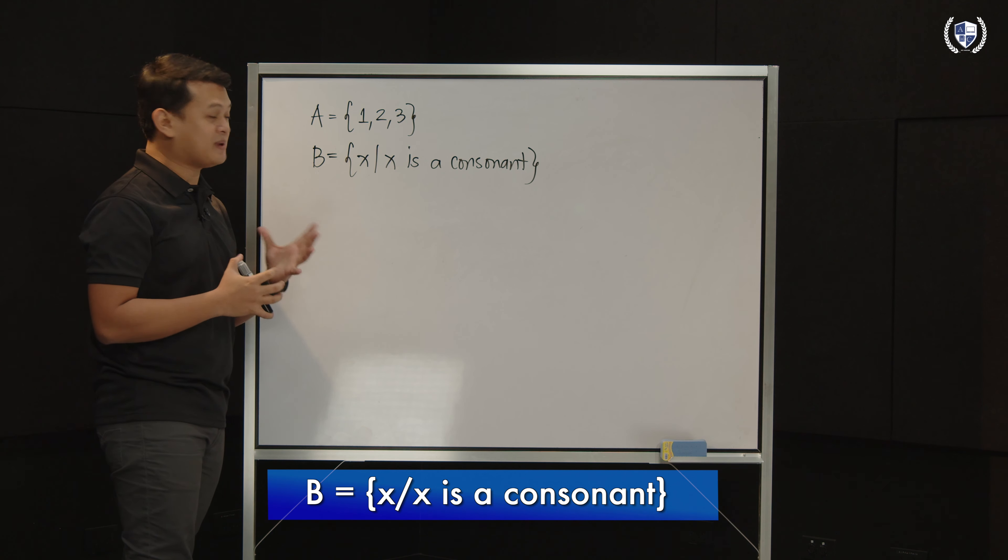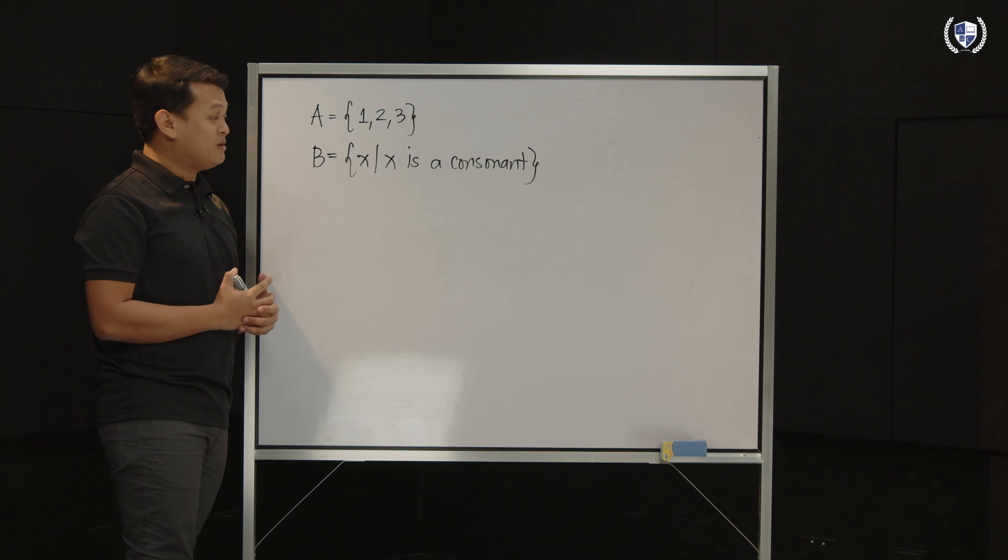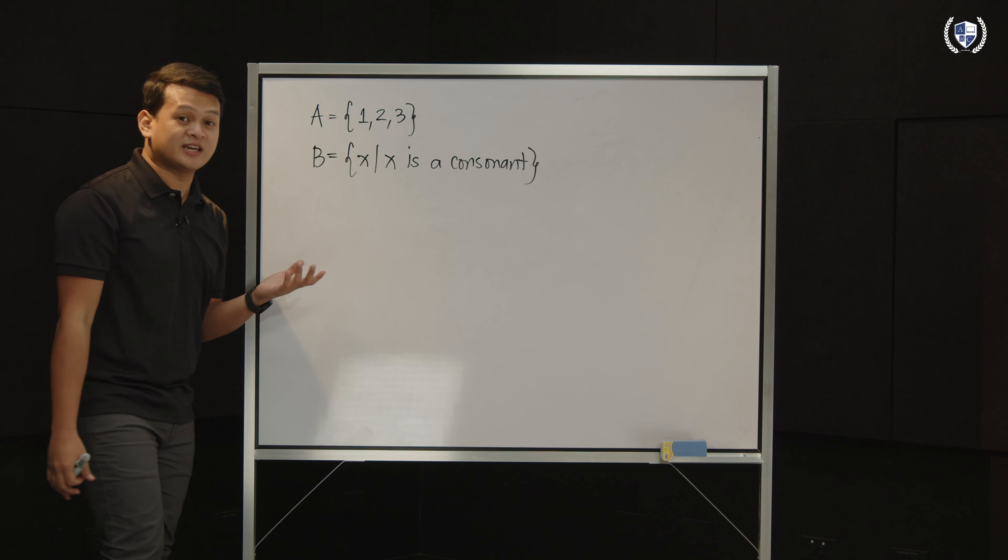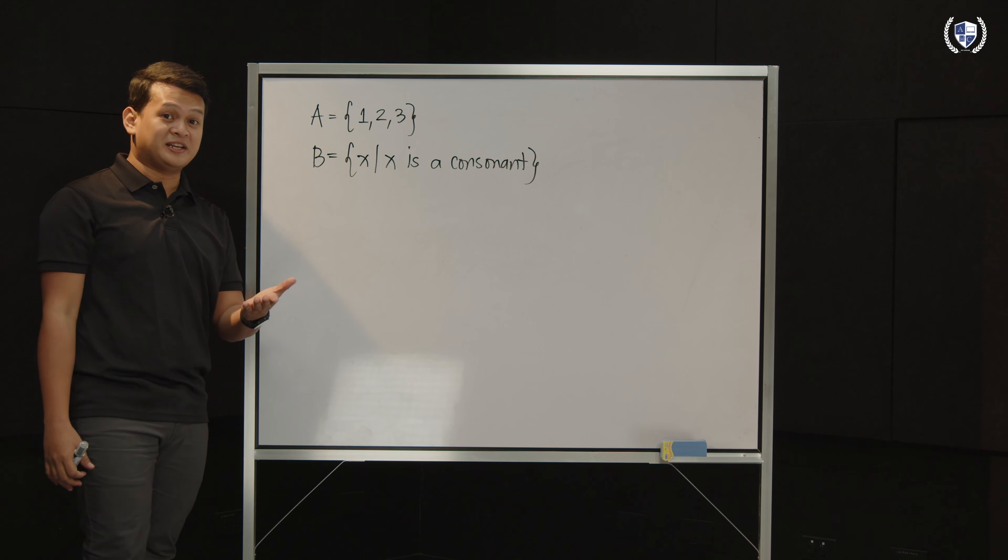so tatanggalan ko yun ng 5 kasi yung 5 ay mga vowels. So, ilan ang elements ni set B? 21 ang elements ni set B. And since nabigay natin yung specific number or value ng elements natin, we can say that set B is a finite set.